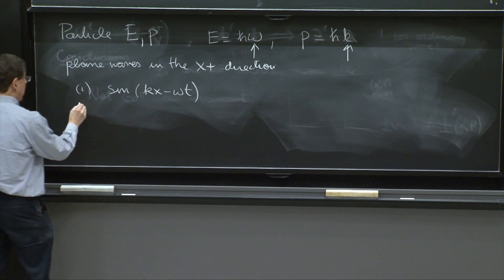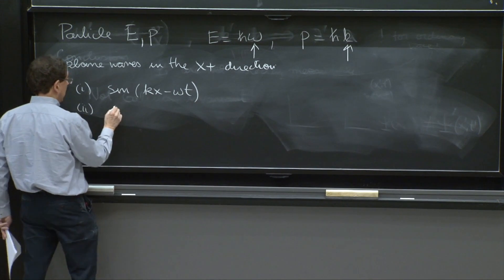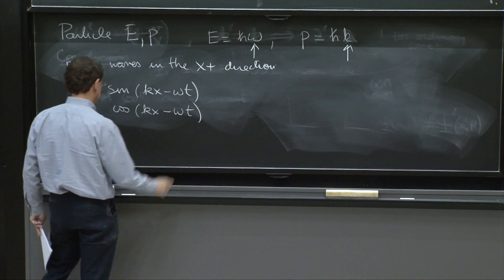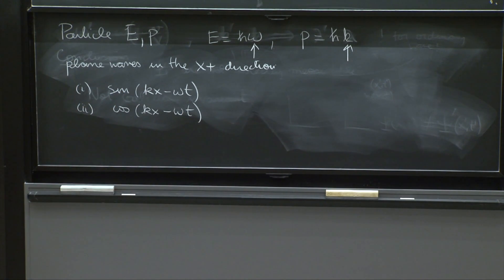Or maybe the de Broglie wave is cosine of kx minus omega t. But maybe it's neither one of them.